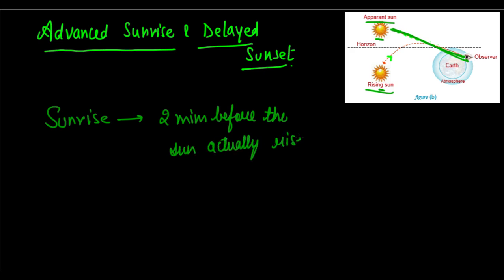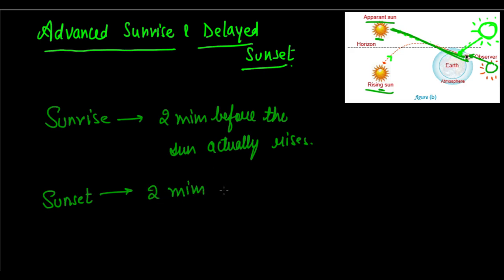The same is the case with sunset. If the Sun is here and sends a ray of light, you will see an apparent position here. Actually the Sun has already gone down, but because of atmospheric refraction you see an apparent position. So you are going to see this two minutes after the actual sunset — sunset occurs two minutes after the Sun actually sets.